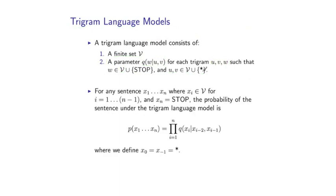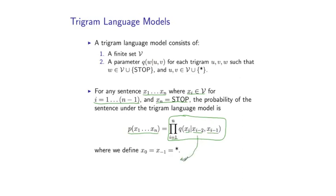Given these definitions, the model defines a distribution as follows. For any sentence x₁ through xₙ, where each xᵢ is in V for i equals 1 to n−1, and where xₙ equals stop, the probability under the trigram language model is defined as a product of terms — the product for i equals 1 to n of q(xᵢ | xᵢ₋₂, xᵢ₋₁). These parameters correspond directly to the conditional probability of xᵢ given the two preceding words.